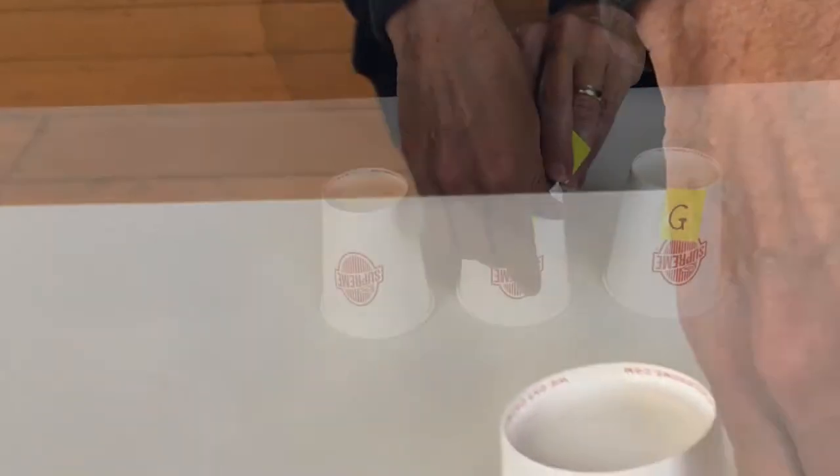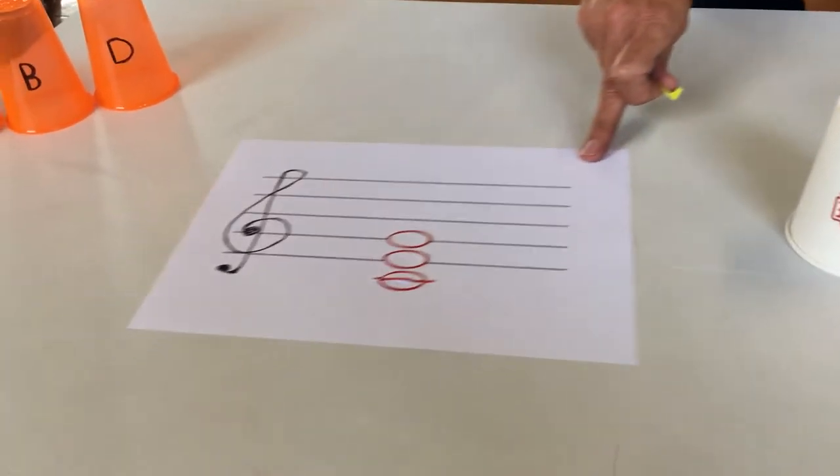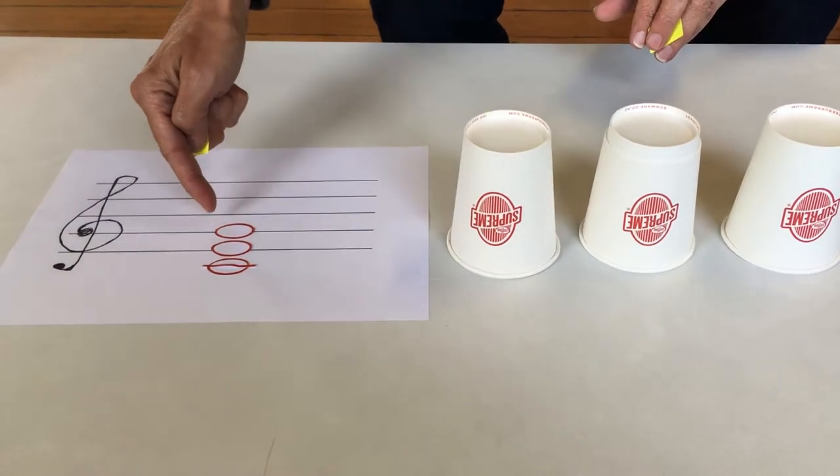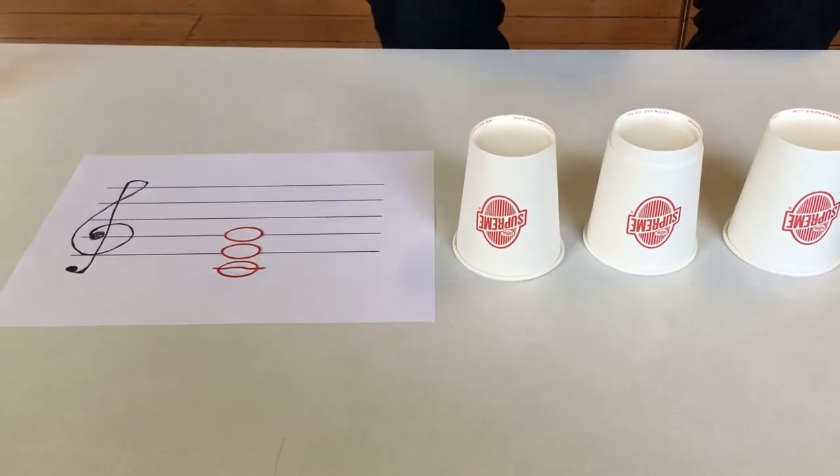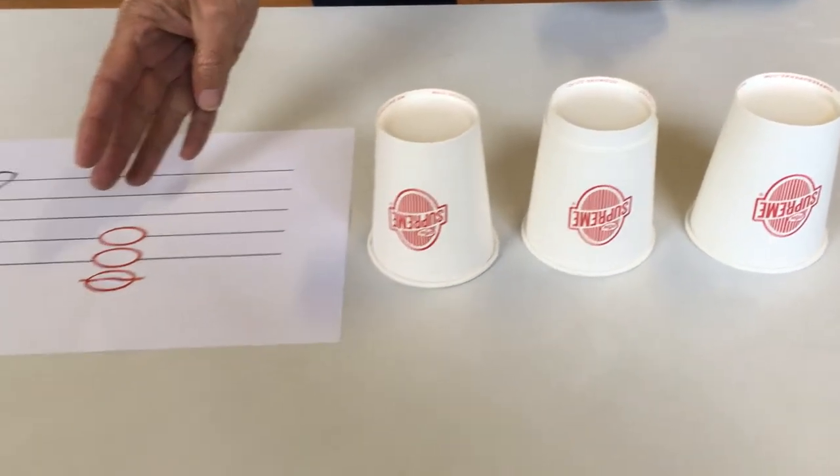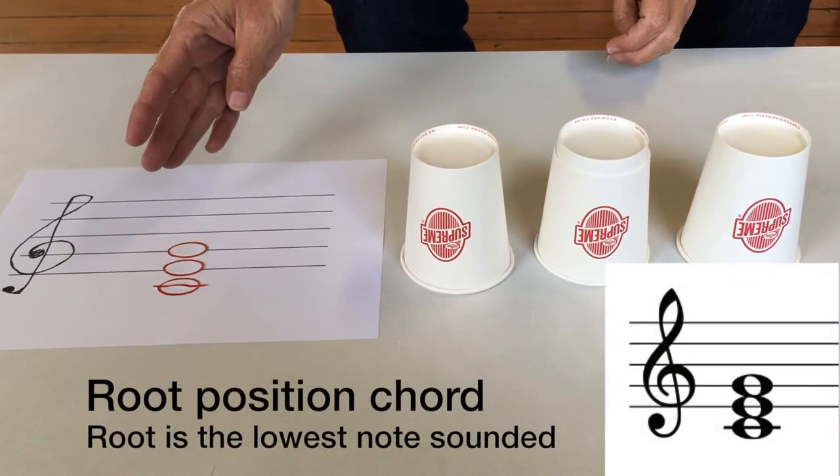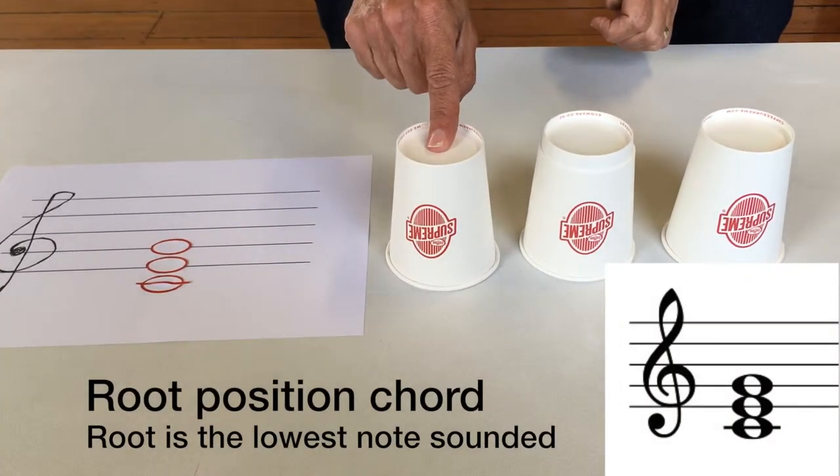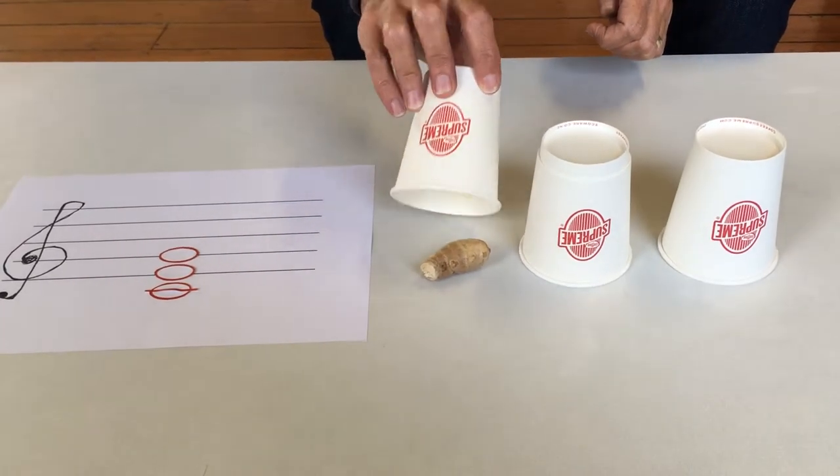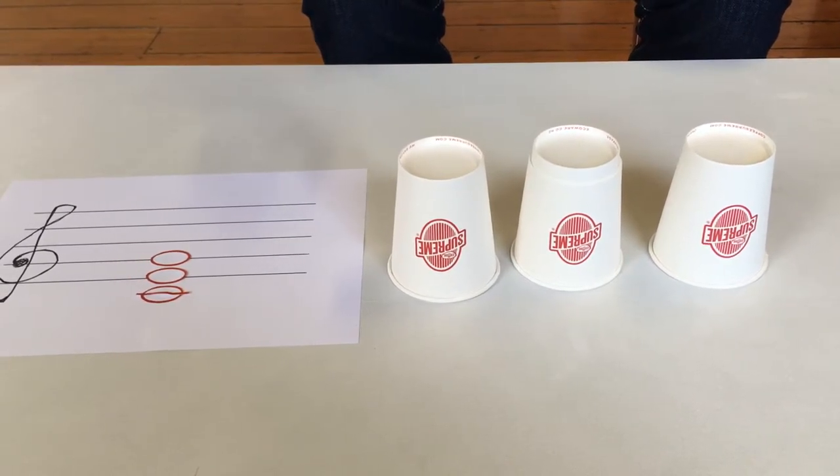Back to the C chord, here it is on paper: C, E, G. What you see here and here is called a root position chord, where the lowest note heard is the root.